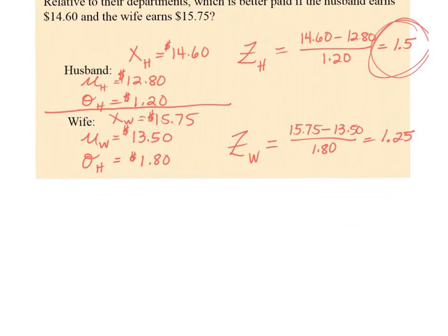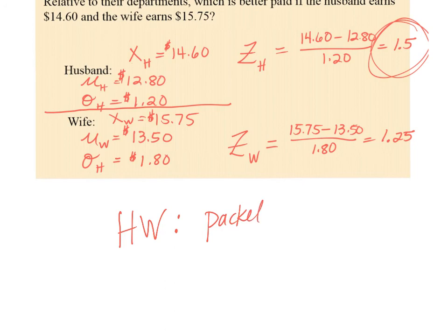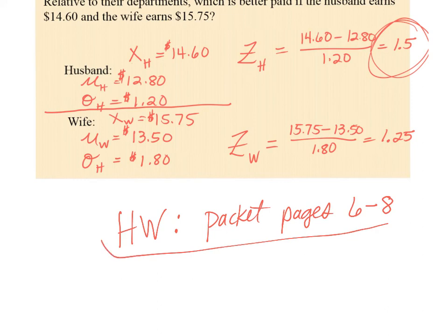That's how you compare two items when they aren't on the same scale — just like we did with Ileana's test score, the two quizzes, and the husband and wife. Your homework is pages 6 through 8 in your packet. Some of it is review — mean, mode, mean vs. median — and then there's new Z-score material.